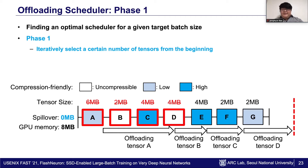At this point, the scheduler checks whether the total data transfer time is smaller than the total execution time of all layers on the forward pass. If this condition is satisfied, the scheduler adopts the schedule and stops. However, in this example, the tensor loading time exceeds the total execution time of the forward pass, and thus the uploading scheduler enters the second phase.